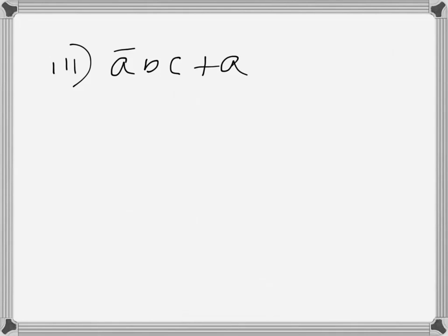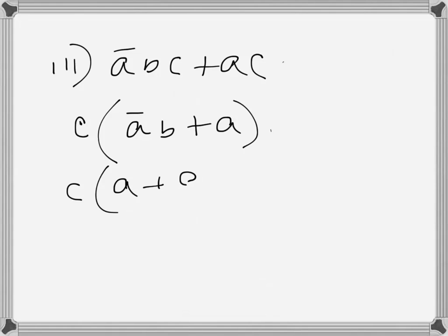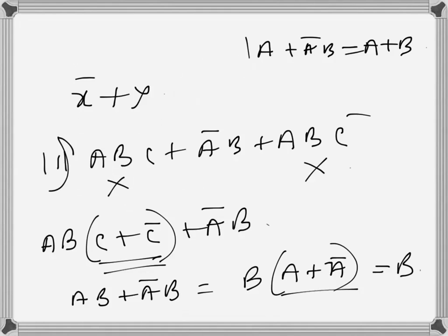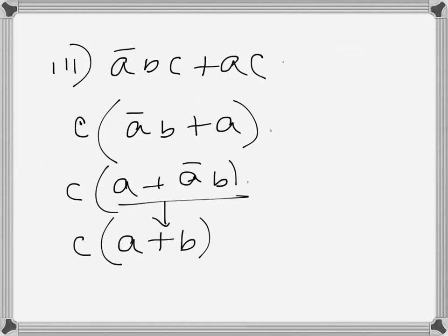For problem three, simplify ā b c plus a c. Taking c as a common factor gives c(ā b plus a). Using the same Boolean identity a plus ā·b equals a plus b, with a as the variable and b as b, this simplifies to a c plus b c, so the final simplified version is a c plus b c.